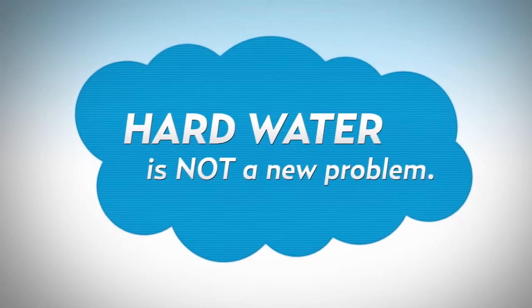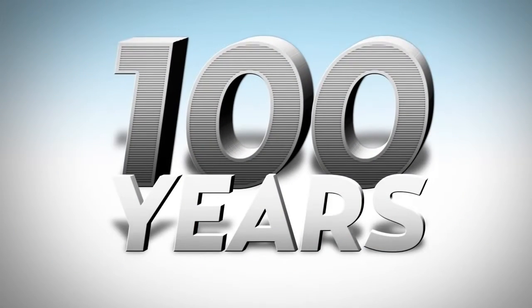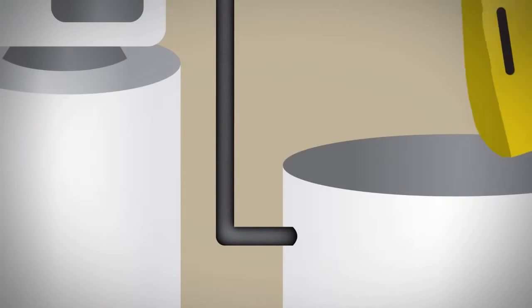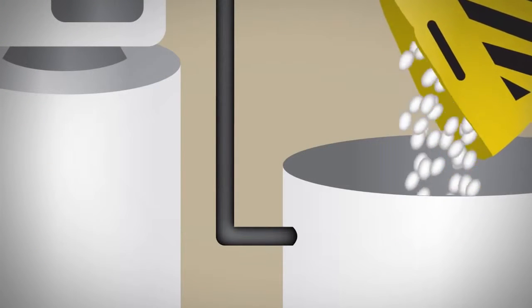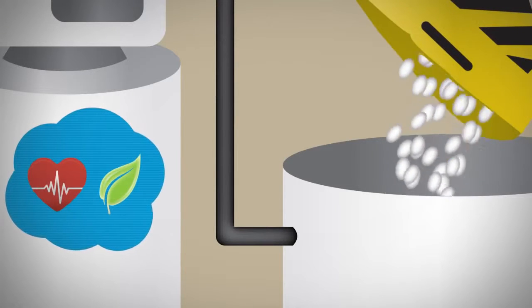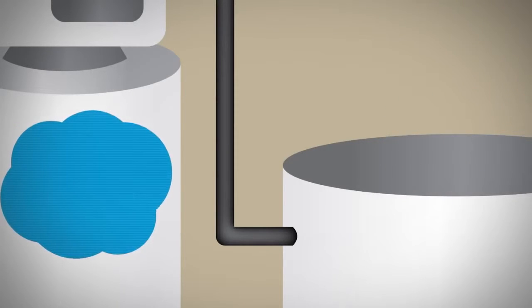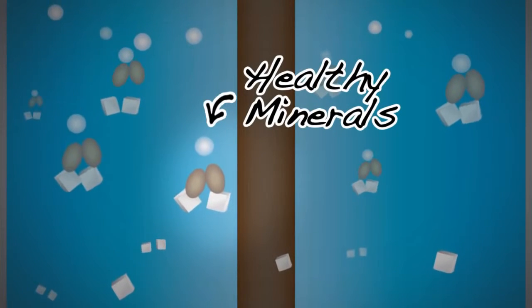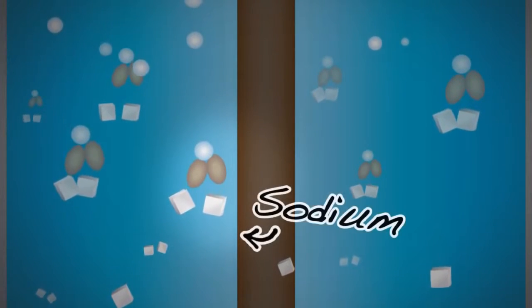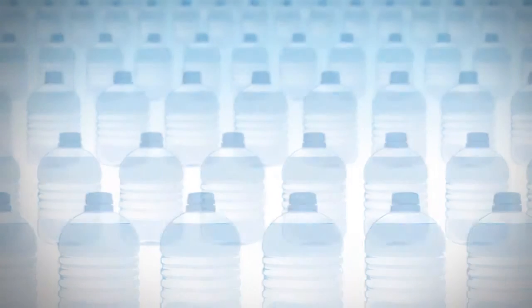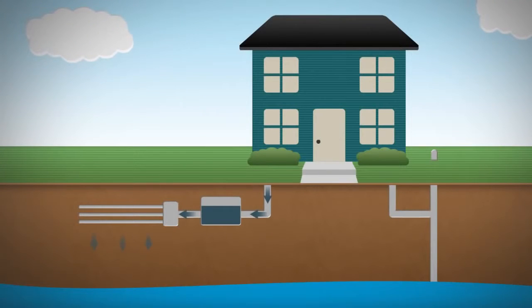Hard water is not a new problem. For over 100 years, the solution has been a salt-based water softener. Unfortunately, large quantities of salt are dumped into softeners and may adversely affect your health and our environment. Through the process known as ion exchange, softeners remove the healthy, beneficial hardness minerals of calcium and magnesium, replacing them with sodium. During the backwash cycle, which can waste up to 120 gallons of water, softeners flush out those minerals and any remaining sodium.